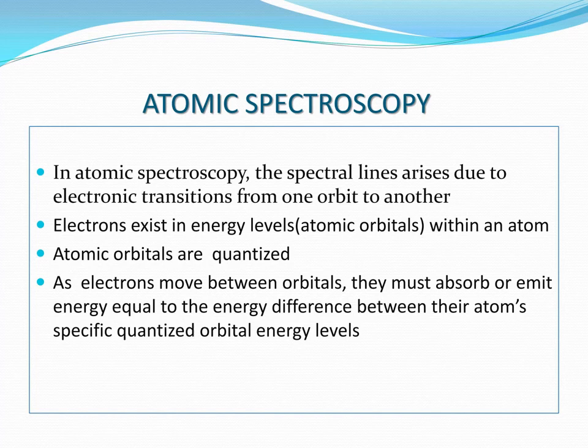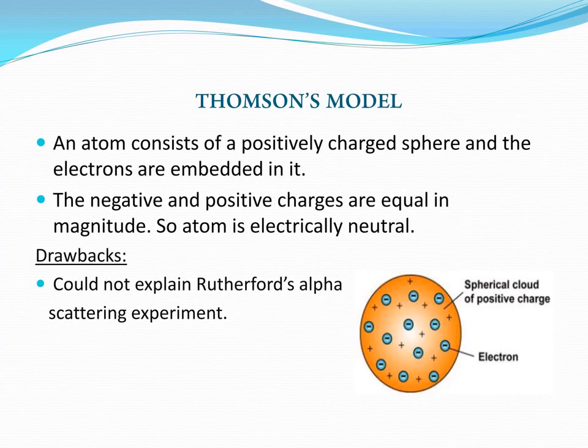Emission spectroscopy is classified under atomic spectroscopy. In this video, we will talk about atomic models including the vector atom model. The first atomic model is Thomson's model. According to Thomson's model, the atom consists of a positively charged sphere in which electrons are embedded.